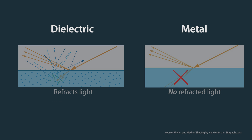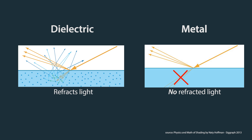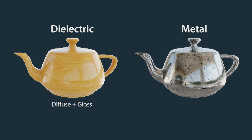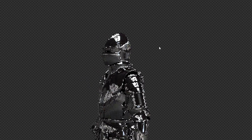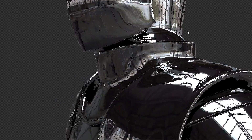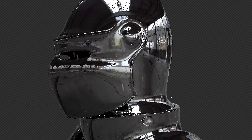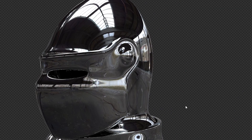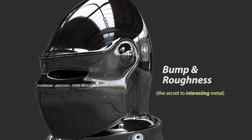Metal is unique because it doesn't refract any light, meaning that there's actually no diffuse — because true metal is 100% gloss. And if you've tried it, you'll probably also know that the bog standard gloss shader isn't very interesting.